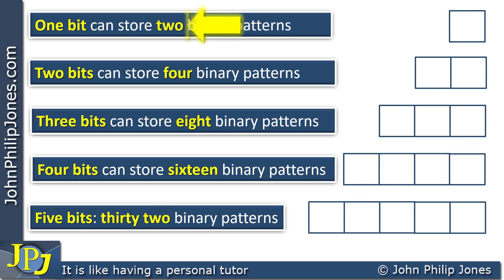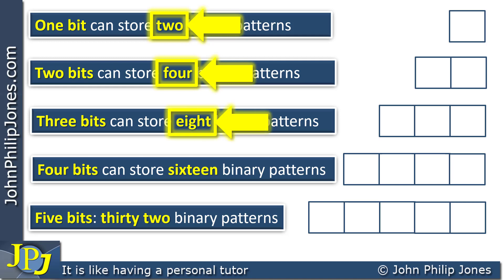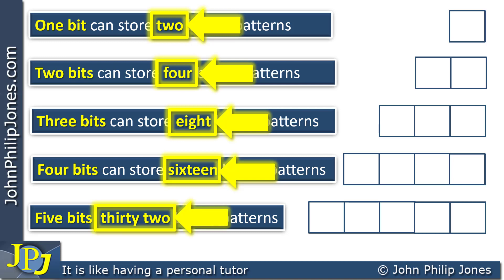When we have one bit, two binary patterns are possible. When we have two bits, there are four binary patterns possible. When there are three bits, we can have one of eight binary patterns. When there are four bits, we can have one of 16 binary patterns. And when there are five bits, we can have one of 32 binary patterns. Looking at the sequence: two, four, eight, 16, 32 — there's a doubling of the number of possible patterns every time we add another flip-flop, every time we increase the number of bits by one.